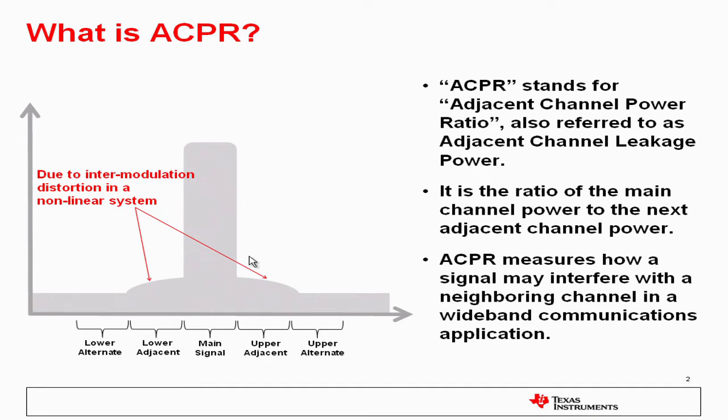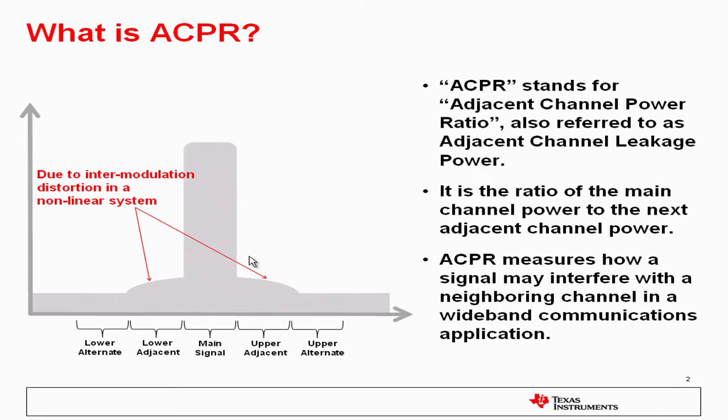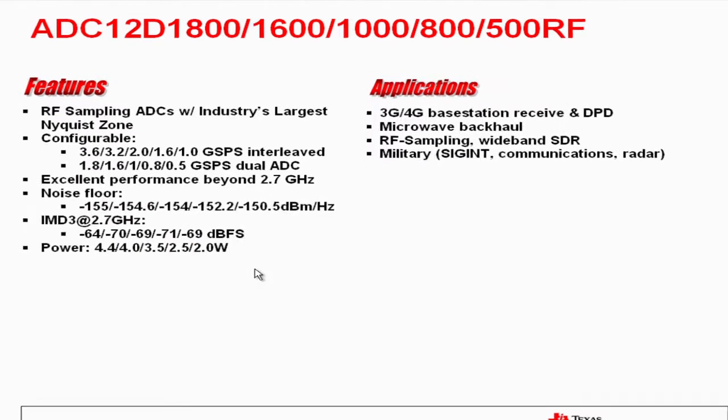One of the worst contributors to ACPR can be the power amplifier because it tends to be the most nonlinear element in a system. Today we're actually going to be taking a look at the ADC. So the product that we're looking at today is the ADC12D1800RF.